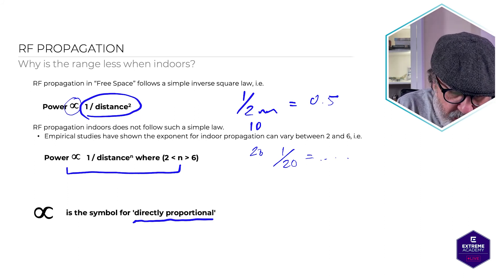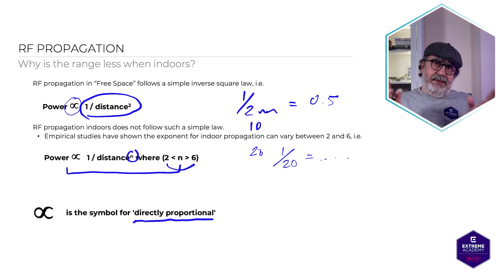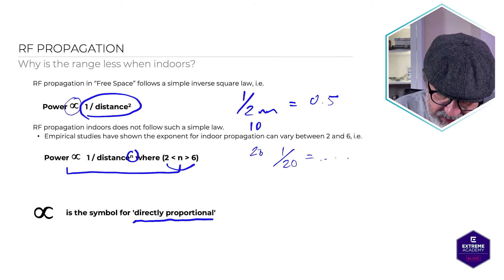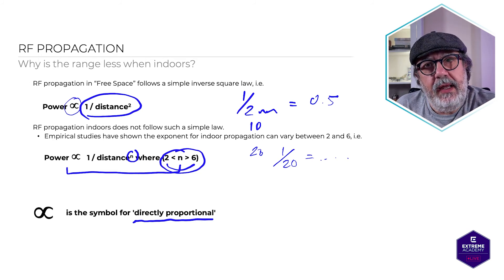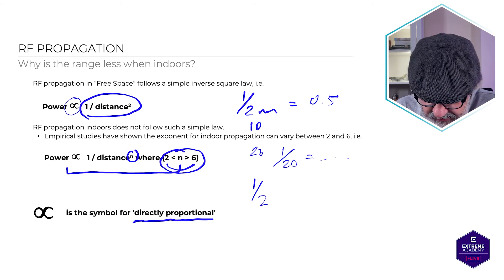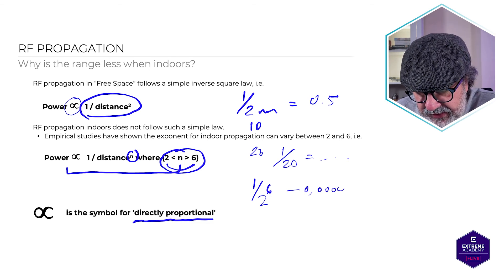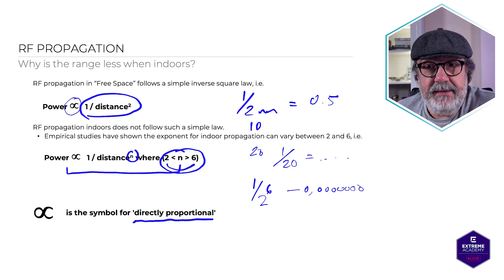Indoors, power is directly proportional to one divided by the distance to the power of n, where n is between two and six. So you can see that one divided by two to the power of six gives a lot of zeros — meaning much greater signal loss indoors compared to free space.